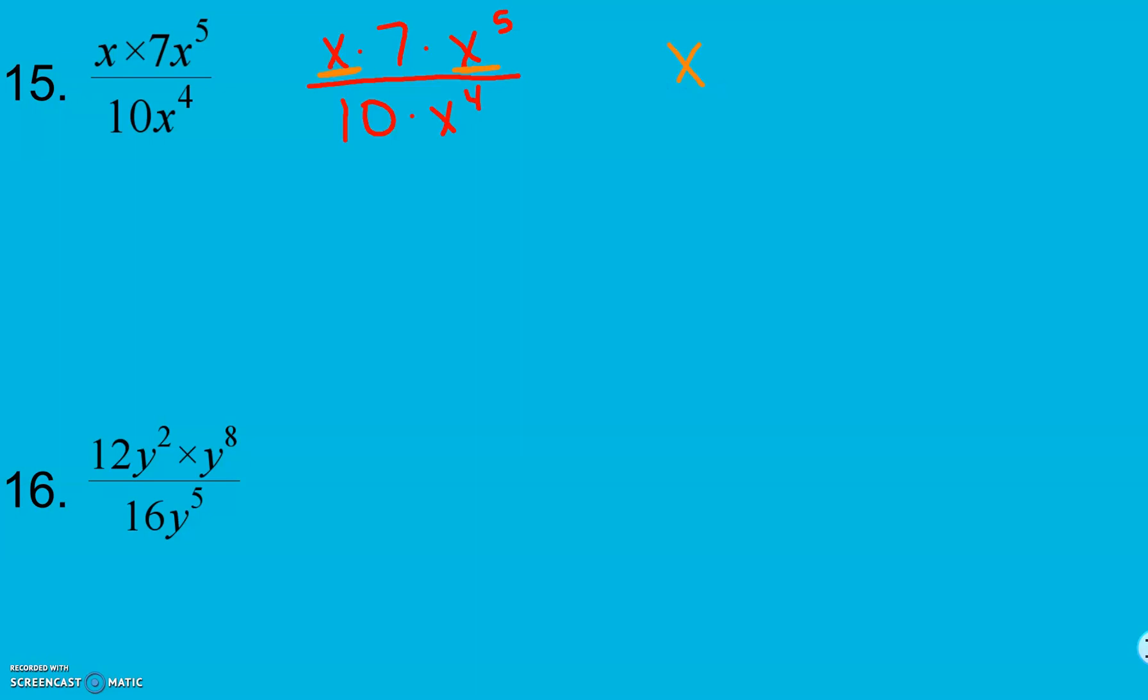Multiplying powers with the same base, so I keep my base, add my exponents. If there's not an exponent, remember that it's a 1 there. So, now I can add those exponents. 1 plus 5 is going to give me to the sixth power. I still have that 7 in my numerator, and 10 times x to the fourth in my denominator. I didn't change those at all.